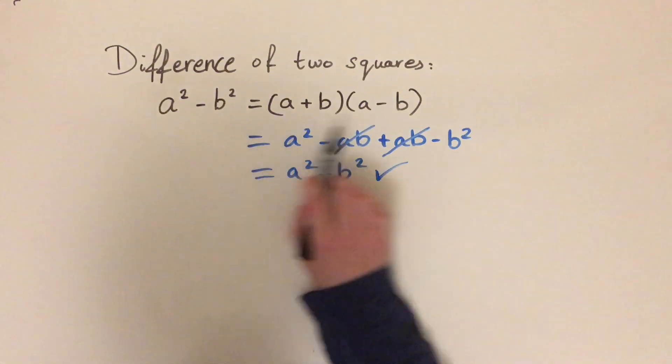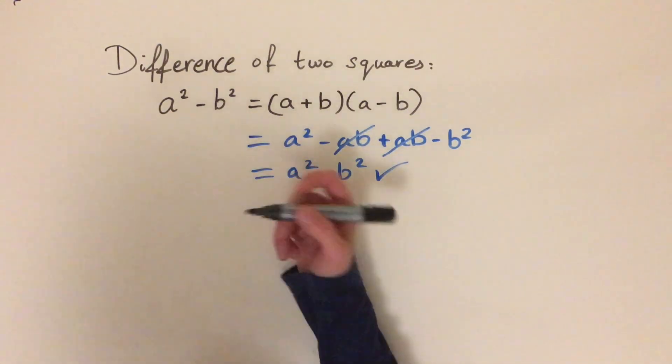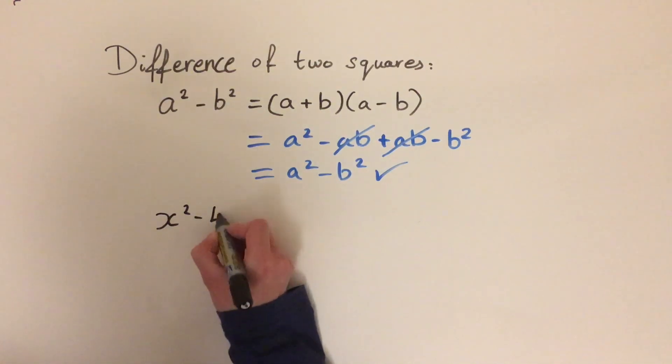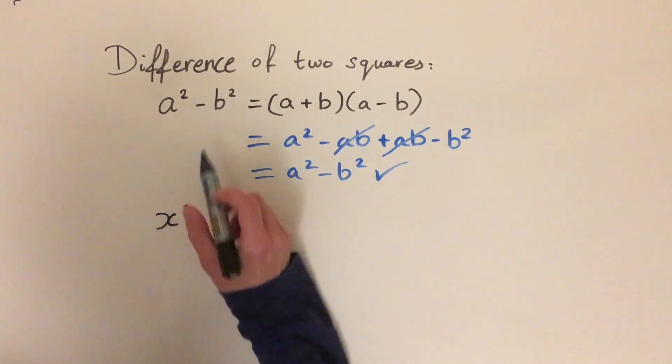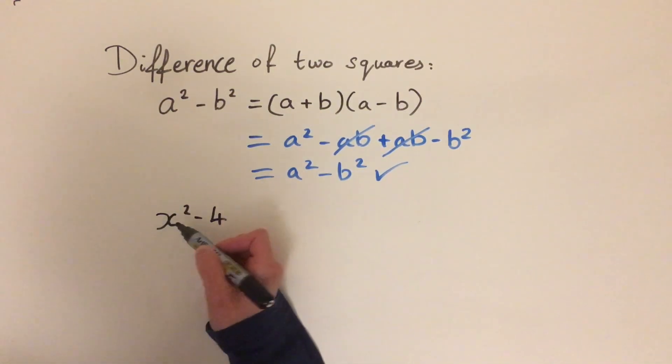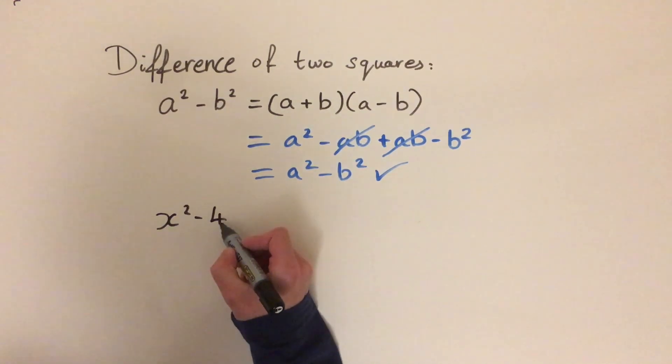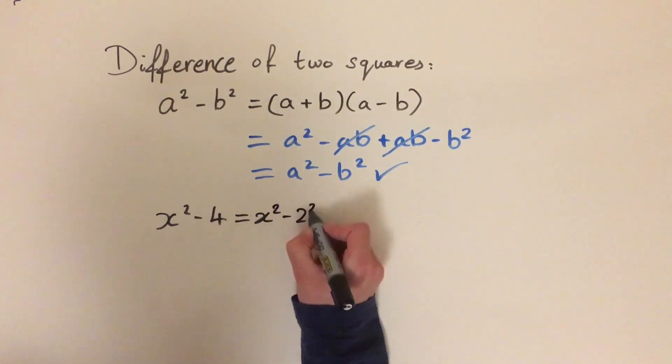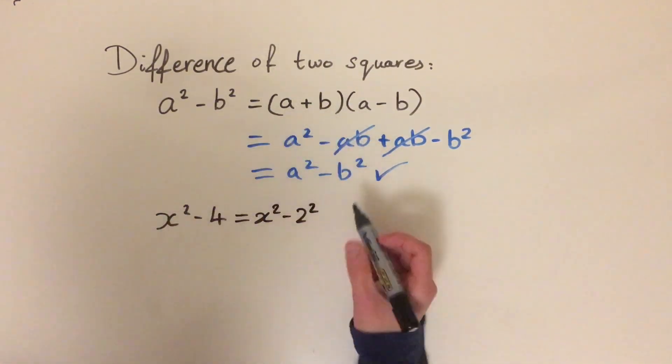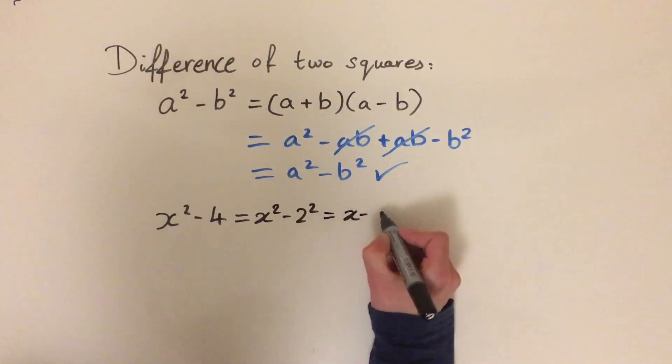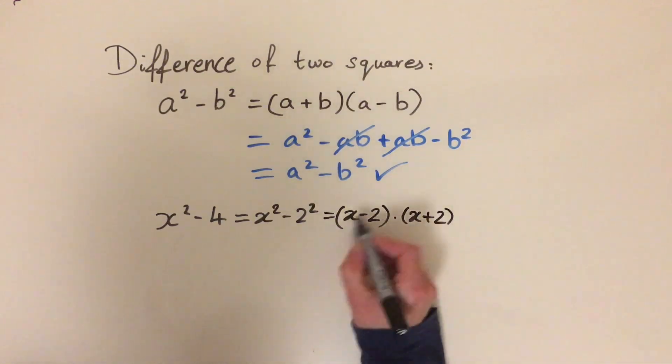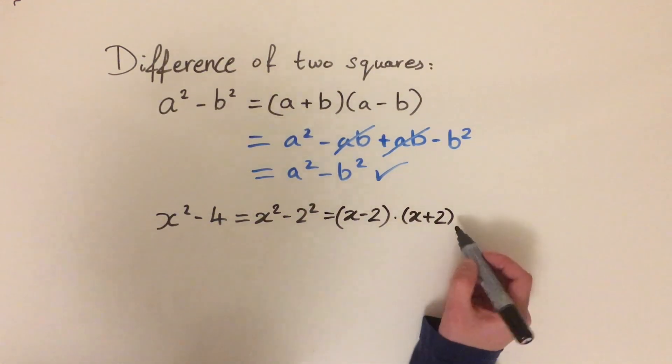So now let's use this formula and simplify some expressions. So my first example is x squared minus 4. And we can plug this straight in because x squared is a square number. And 4 is also a square number. So 4 is 2 squared. So this equals x squared minus 2 squared. And now we can use this formula straight away. And we get x minus 2 times x plus 2. So this is in a more simplified form which is what we want.